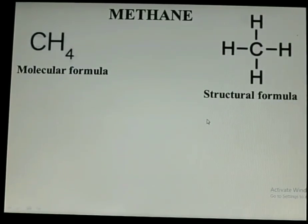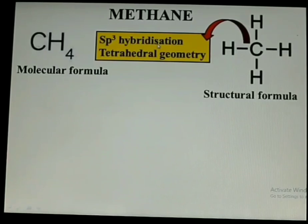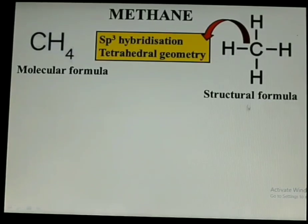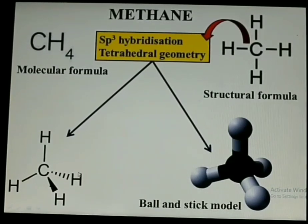To get the complete picture of methane, we should know about the hybridization of the carbon atom. In methane, the carbon atom is in sp3 hybridization. For sp3 hybridization, the geometry is tetrahedral — that means this carbon atom is in a tetrahedral shape. So a complete representation of methane should definitely represent that tetrahedral shape. This representation is the complete representation of the methane molecule.